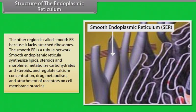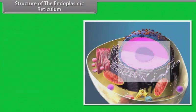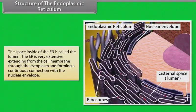Smooth endoplasmic reticula synthesize lipids, steroids and morphine, metabolize carbohydrates and steroids, and regulate calcium concentration, drug metabolism and attachment of receptors on cell membrane proteins. The space inside the ER is called the lumen. The ER is very extensive, extending from the cell membrane through the cytoplasm and forming a continuous connection with the nuclear envelope.